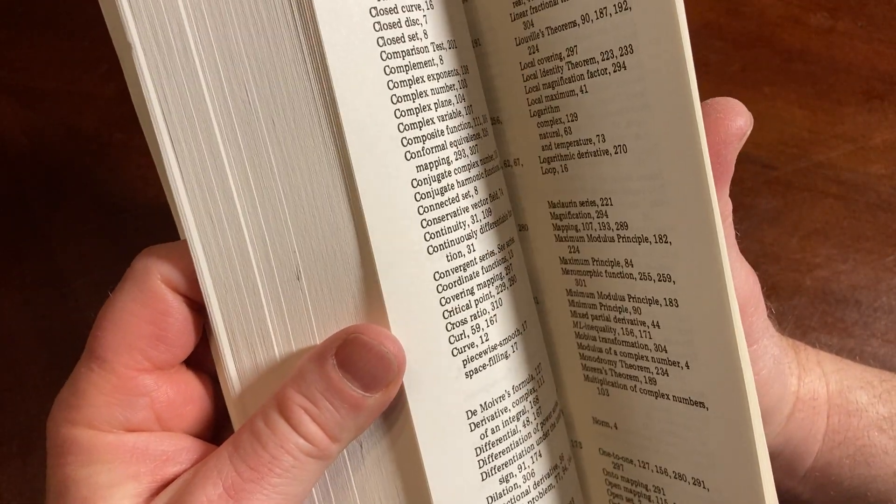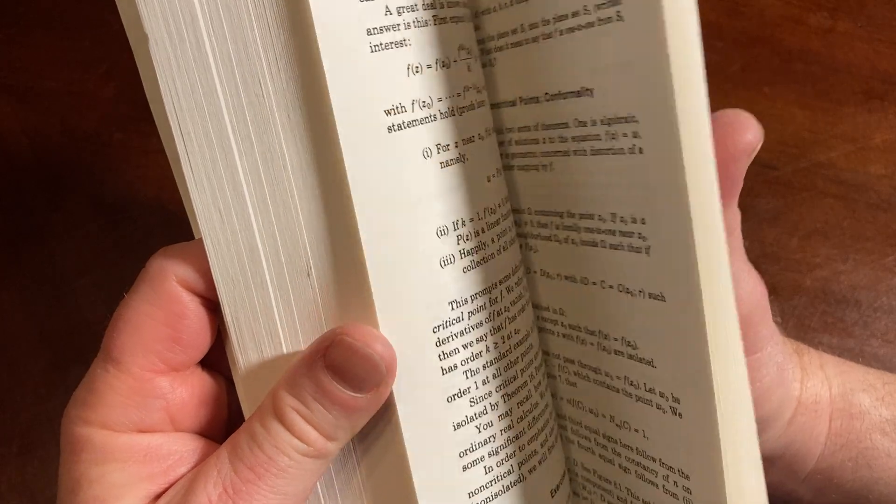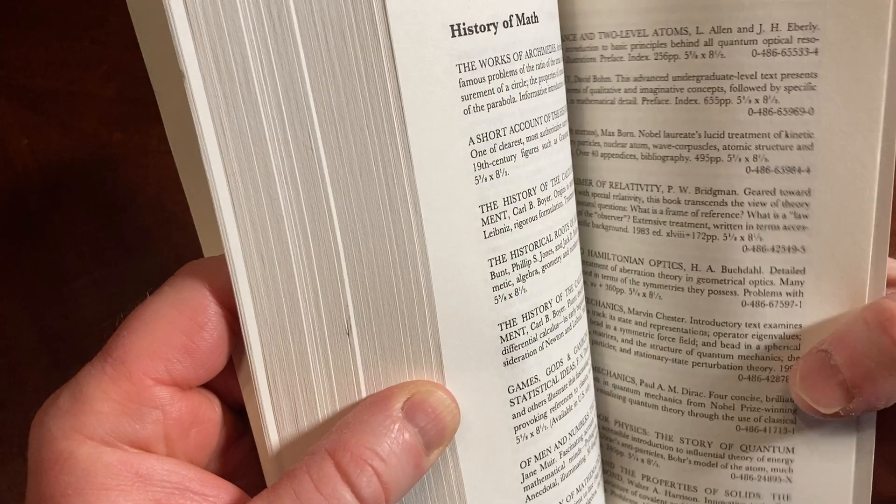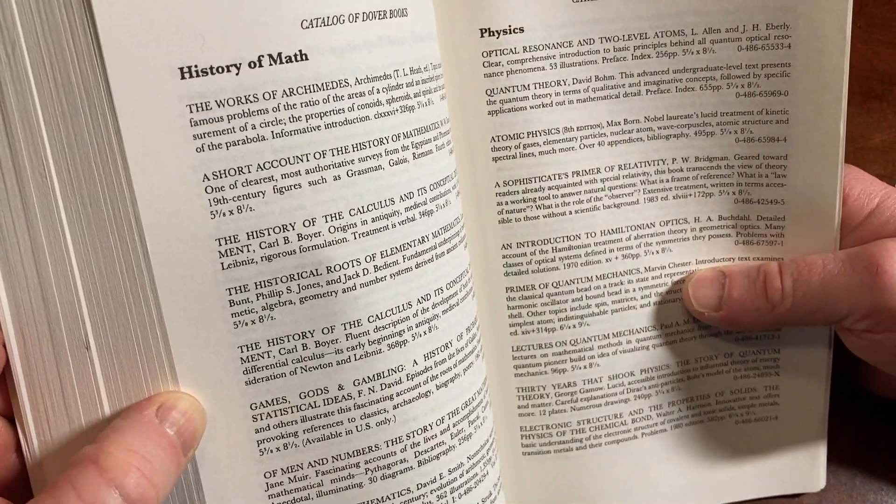One of the really fun things about old books, I was thinking about 83, is a lot of old books used to have advertisements in them and sometimes you would see advertisements for very strange things. Here's other Dover books that you can get.